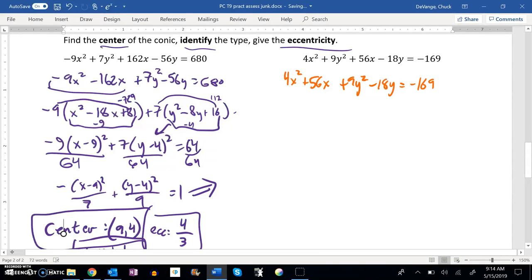Now, I'm going to complete the square. So, I divide a 4 out of here, factor out of 4. 56 divided by 4 is 14. Leave a little space so I can complete the square. Bring out a 9. Y squared minus 2y. Still equal to negative 169.